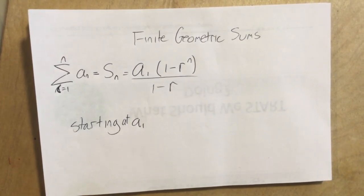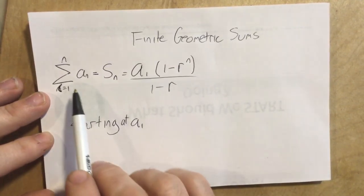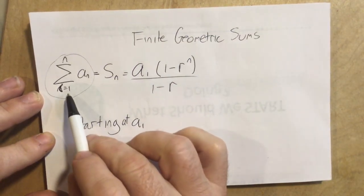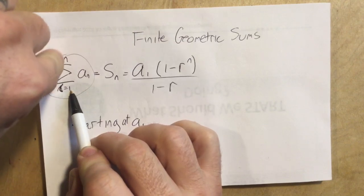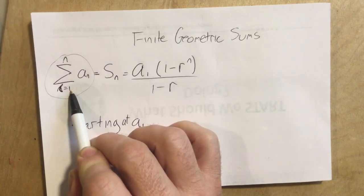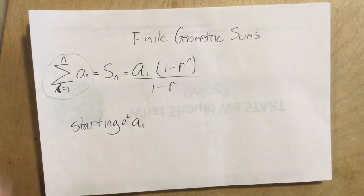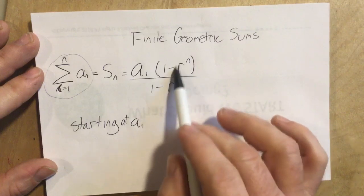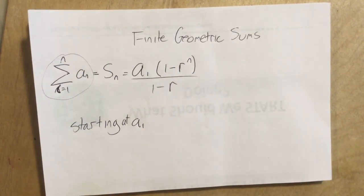Hey everyone, you may recognize this formula that we talked about in class. The sum of the first term through the nth term of some geometric sequence is equal to the first term times 1 minus the common ratio to the nth power, over 1 minus r, starting at a sub 1.